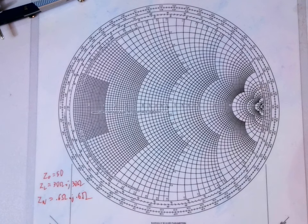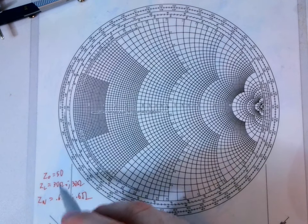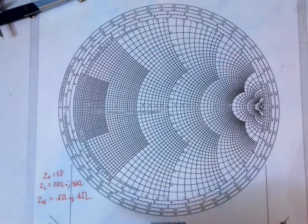To start with, we're going to start out with a load of 30 ohms at plus J30, so inductive reactance of 30 ohms, with a Z0 of 50. So first we're going to need to normalize this by dividing each term by 30, which gives us 0.6 ohms plus J0.6.